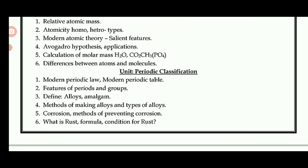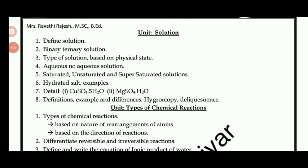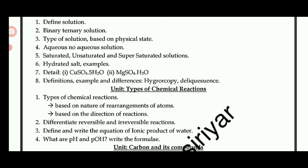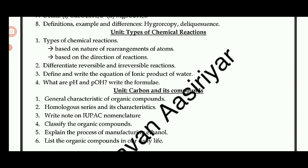In the description you will find the periodic table — its features, periods, and groups — all of which are very important. There is also a PDF link in the description with study material questions. Types of chemical reactions is an important topic: carbon and compounds — one question is repeated as a 4-mark and a 2-mark question — covering types of chemical reactions based on the nature of rearrangement of atoms and based on the direction of reaction.